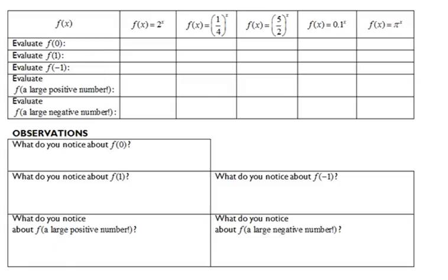First of all, I want you to fill out this table right here. You have five different functions, and then you have instructions, evaluate f of 0. That's just a fancy way of saying plug 0 in for x, tell me what the answer is. Do it for the five different functions. Do it for 0, 1, negative 1, and then I want you to evaluate for a large positive number. So pick a really big positive number, pick a really big negative number, plug that in. It's probably best if you pick the same one for each of them. And then I want you to see if you can fill in that table for observations about these functions. What do you notice? What's similar for all of them? What's different? Can you kind of group any of them together? Do you see similar trends?